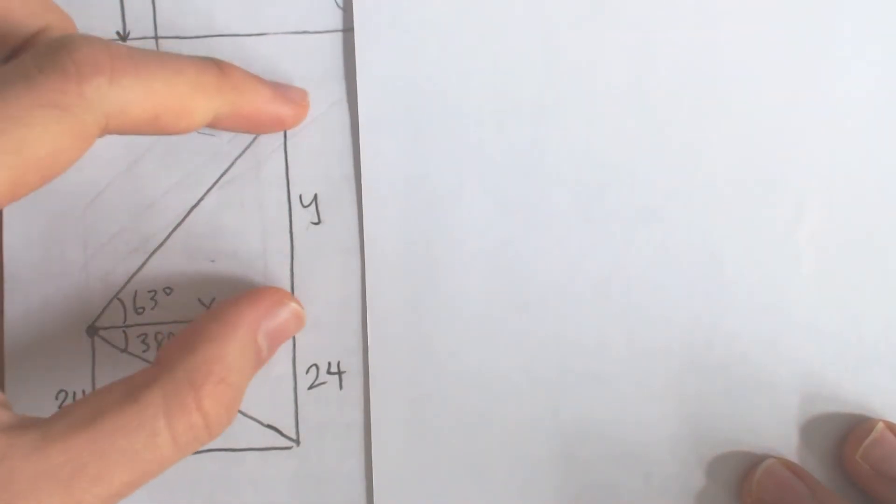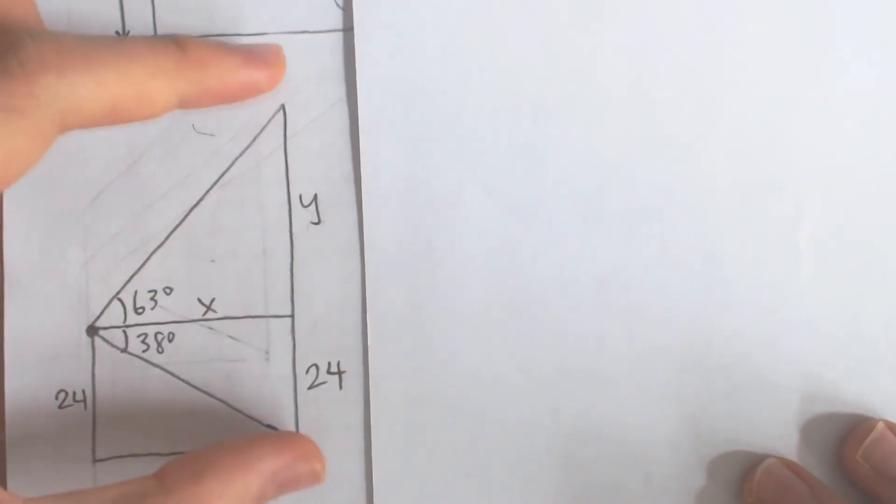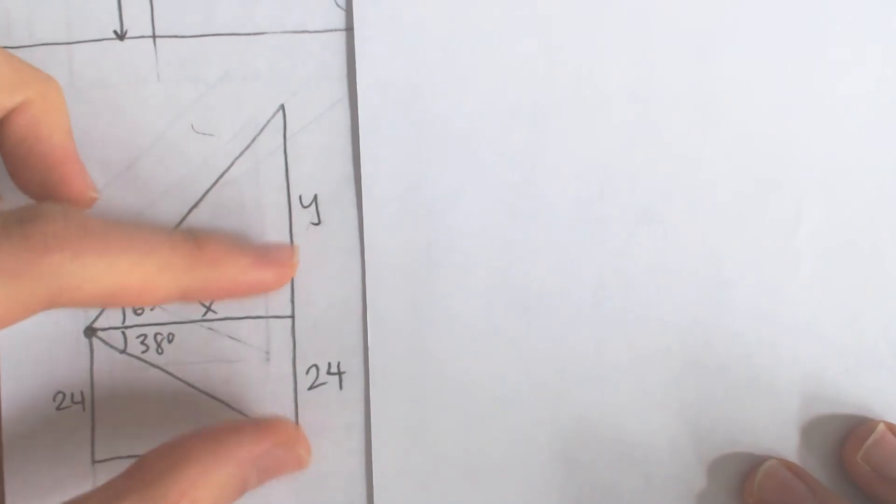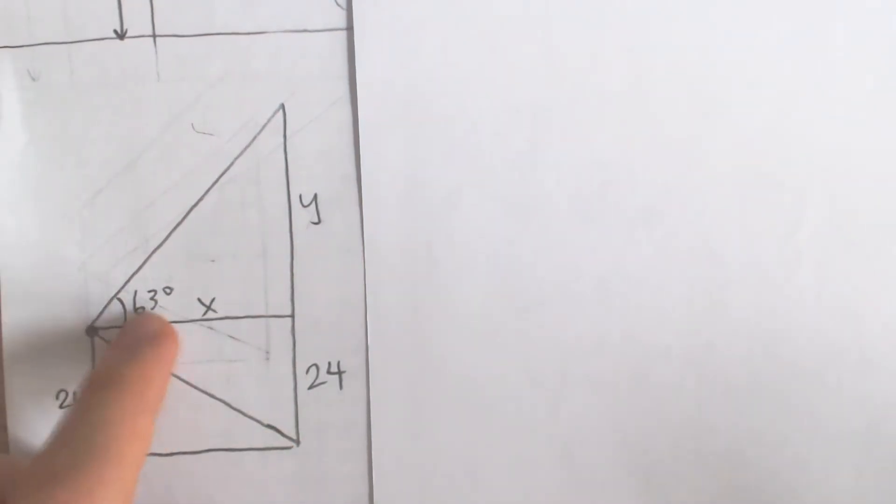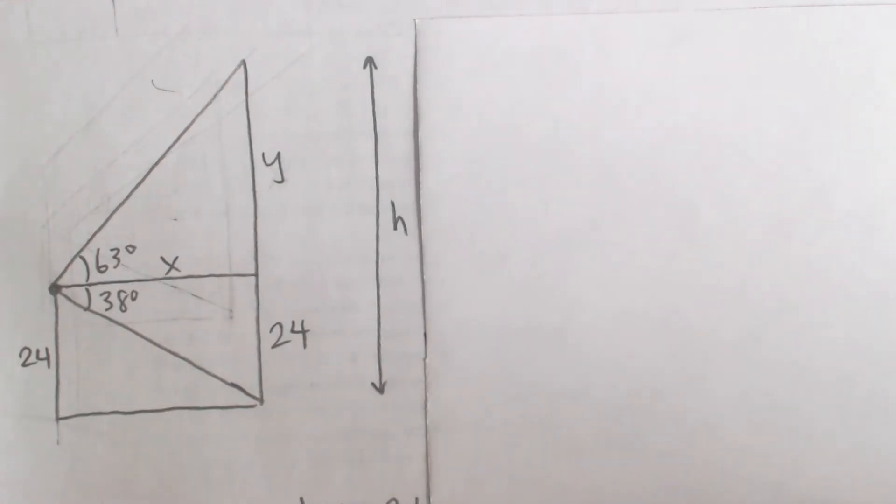So really, if we find what y is here, then the height of the building is just y plus 24. Our goal is going to be using these angles and side lengths in order to find y. That might sound a little bit abstract, but here's what we're going to do.